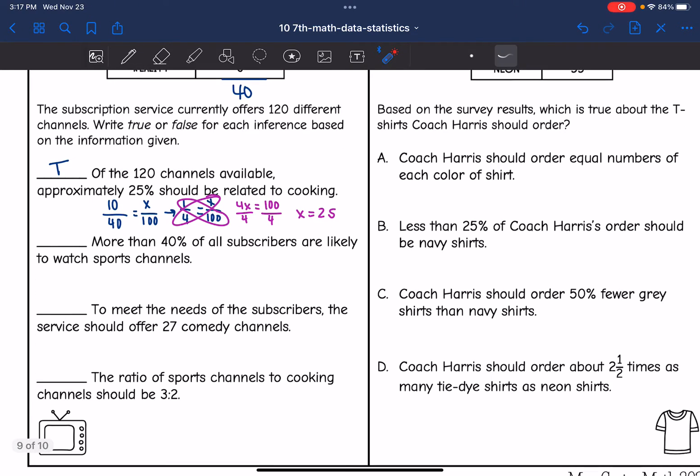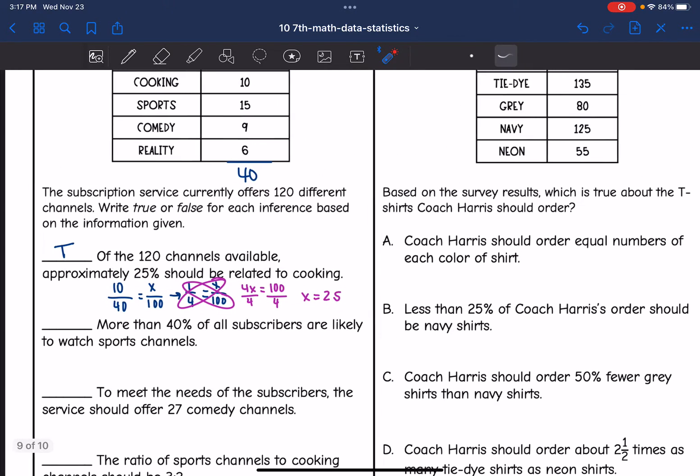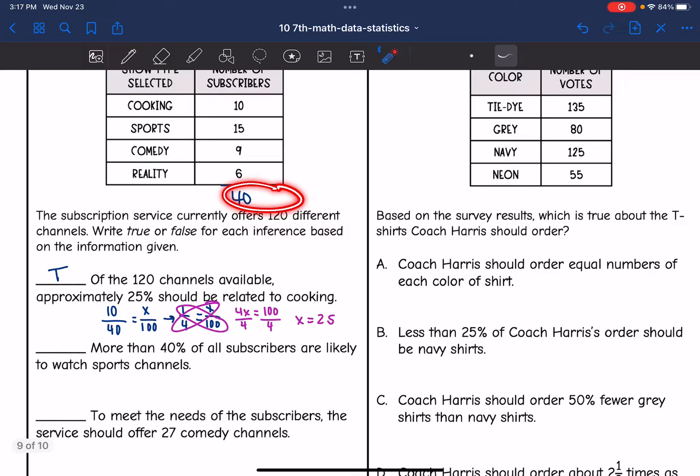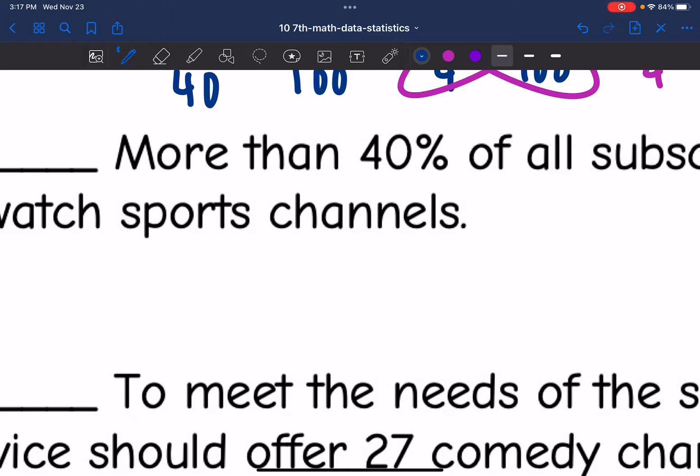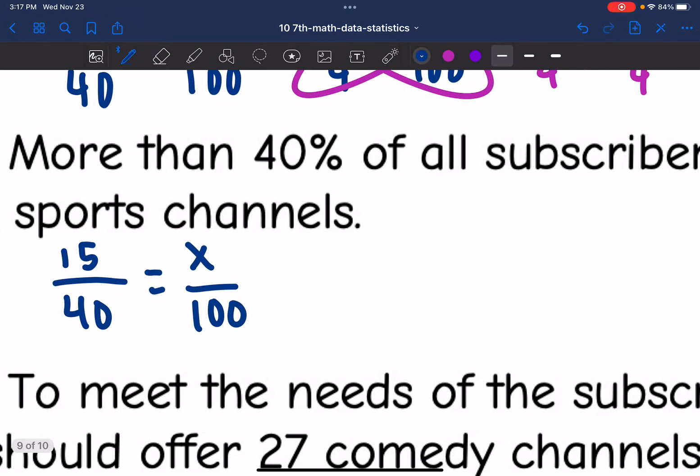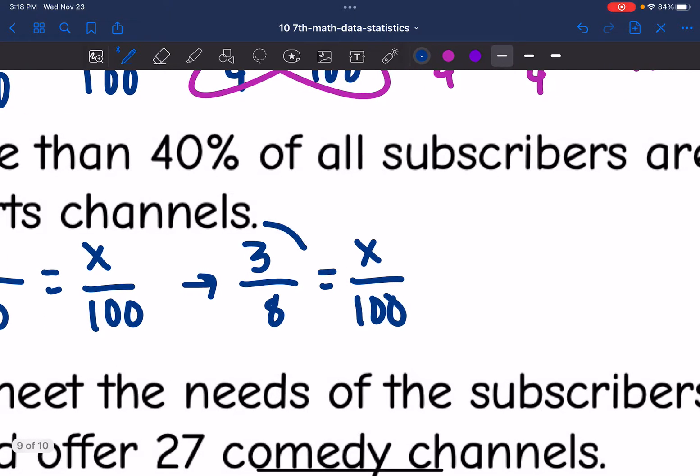Okay, let's look at the next one. It says more than 40% of all subscribers are likely to watch sports channels. So out of the 40 that they looked at, 15 said sports. So let's set up a percent proportion to see if that percent is more than 40. So we would do 15 out of 40 equals x over 100. I'm going to simplify this. Both of those numbers are divisible by 5. So that would simplify to 3 over 8 equals x over 100. And now I'm going to cross multiply.